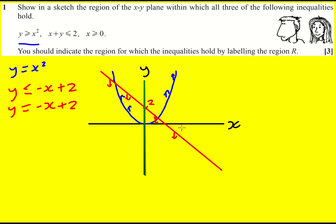Okay, so we're nearly there. This x is greater or equal to 0, so it's everything to the right. Okay, and where they're all satisfied is this region here.